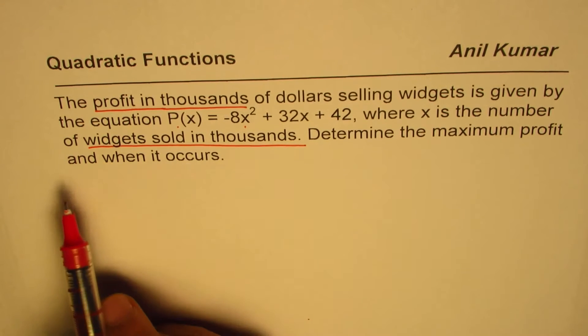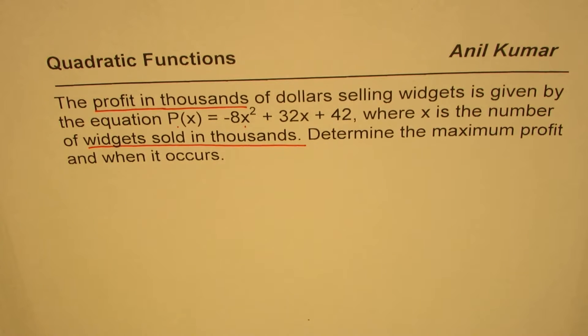Determine the maximum profit and when it occurs. Now the key idea here is that the numbers which you calculate are given in thousands. So when you write down the answer, don't forget to put thousands of those numbers. Otherwise you're making a mistake. So that is the key.